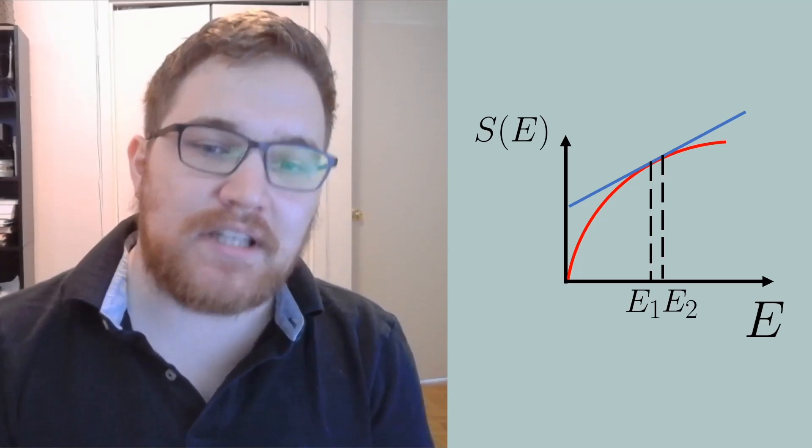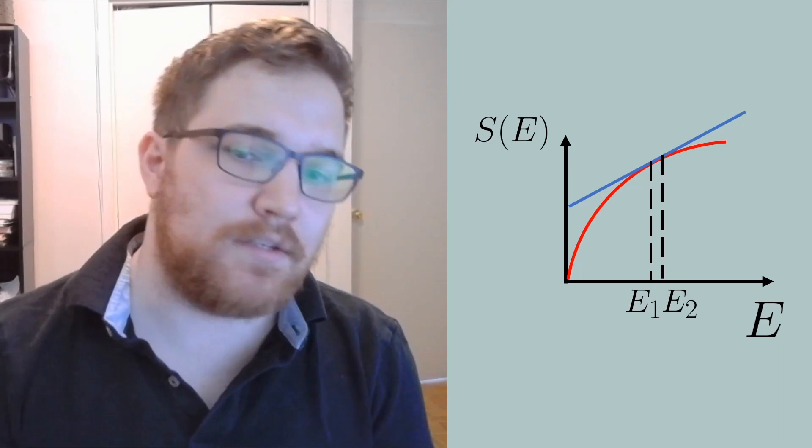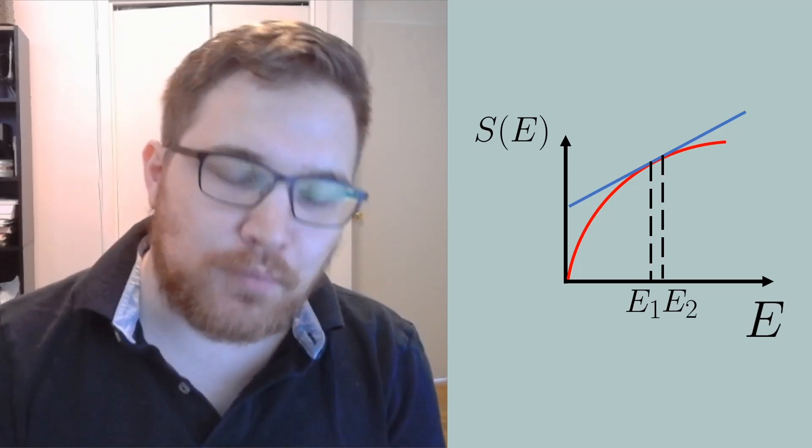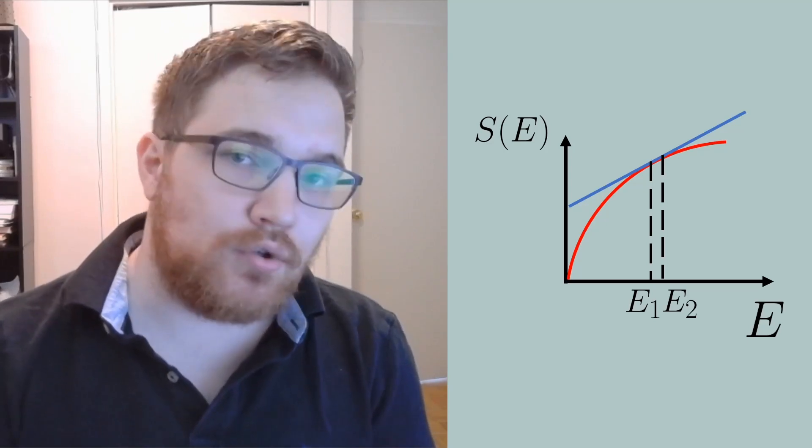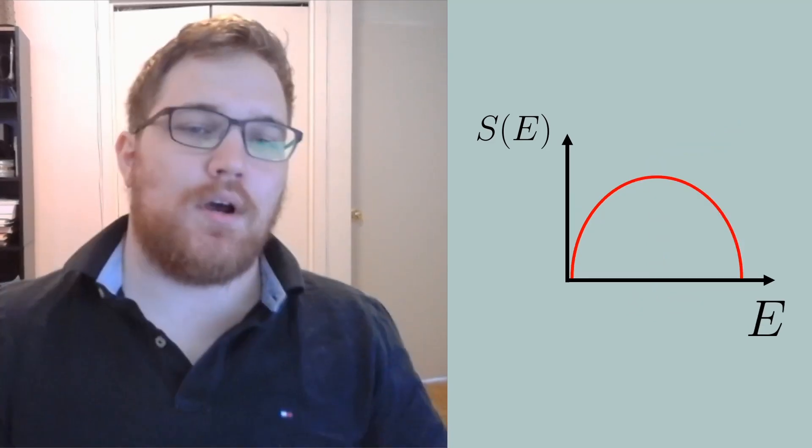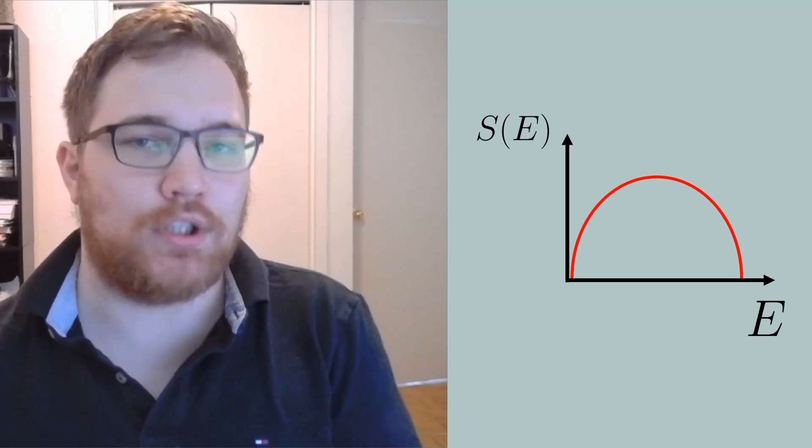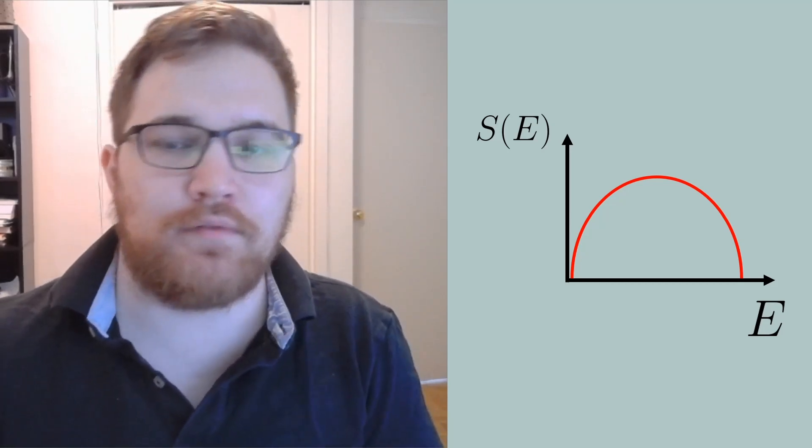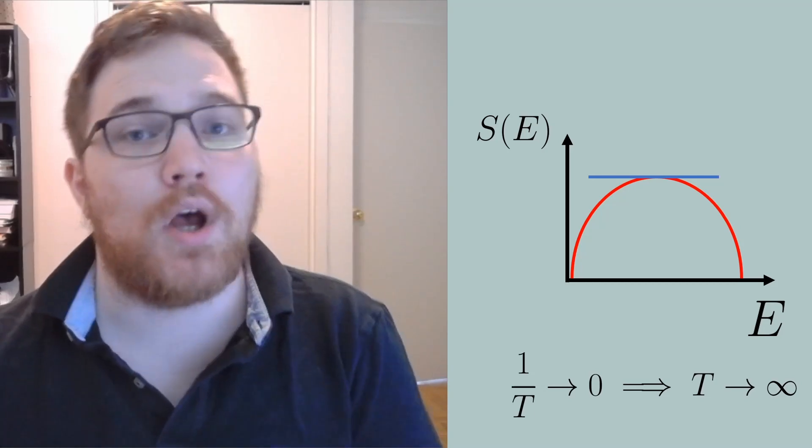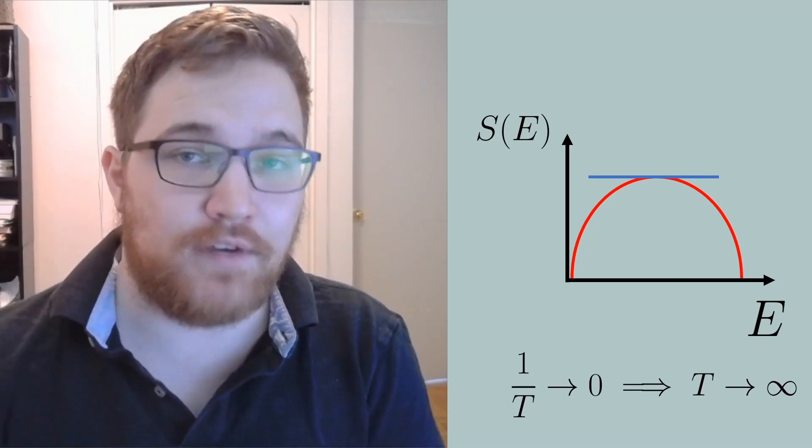This in turn guarantees the temperature will always be positive. From this perspective then, higher temperature would correspond to higher energy. But what if we had a curve that instead looked like this? We see, for example, that at the height of our curve, the slope would be zero, corresponding to infinite temperature.